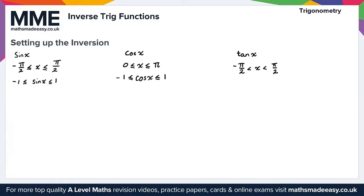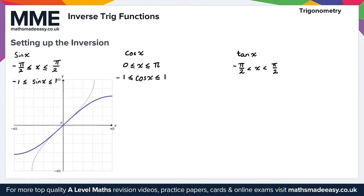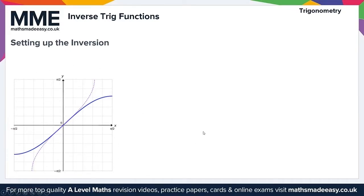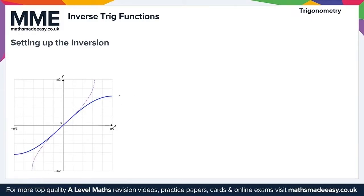Now let's look at the graphs of sine x and its inverse, cos x and its inverse, and tan x and its inverse. Starting with the first graph — in blue here we have sine x, and this purple dotted line is arc sine of x.